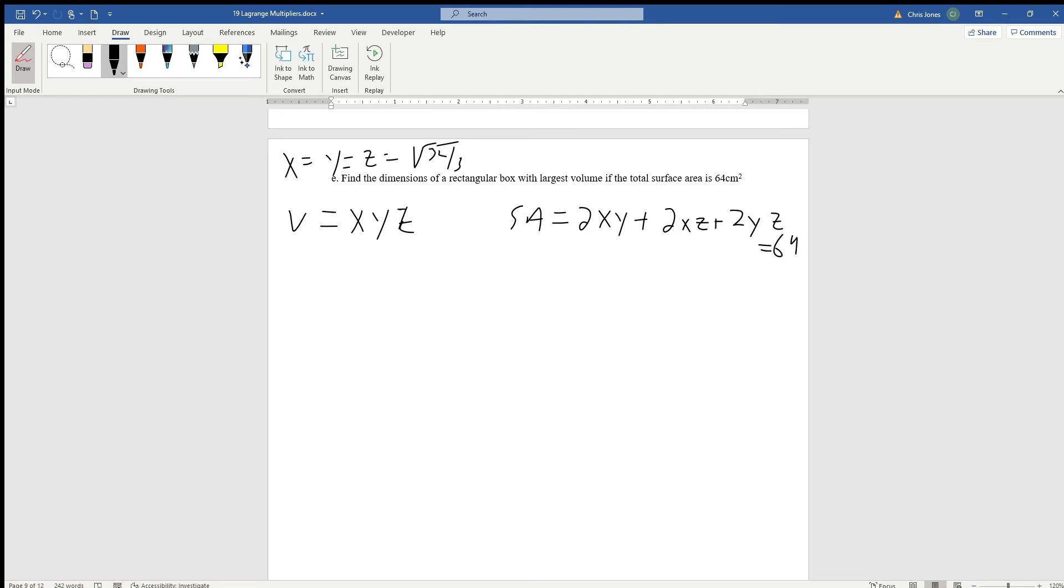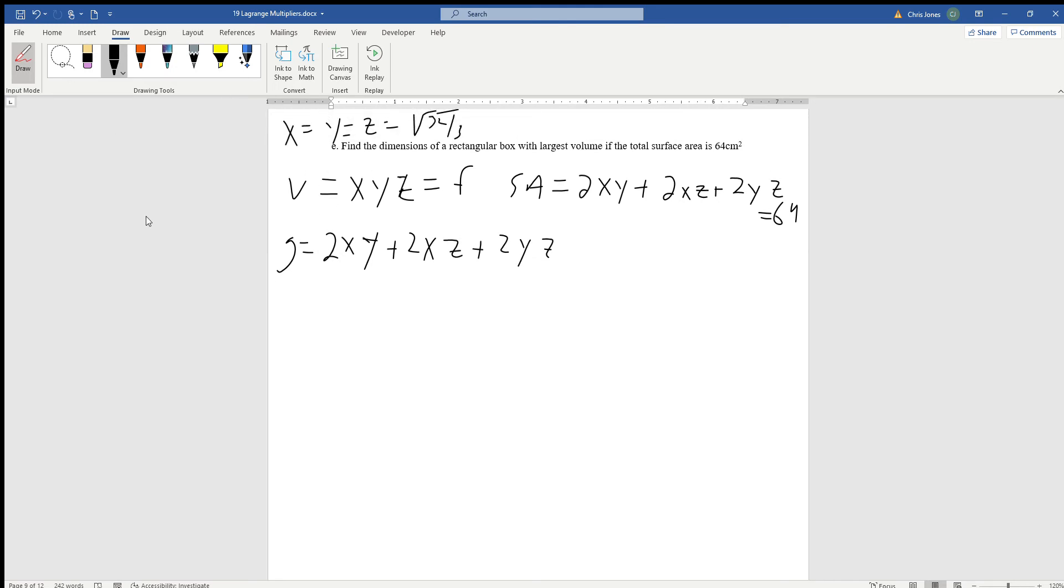So if this is our function f, our function g is going to be 2xy plus 2xz plus 2yz. Then we can just use the formula for the Lagrange multiplier.